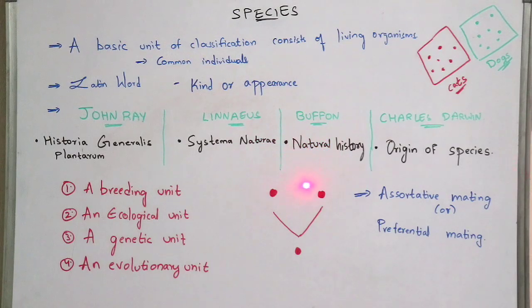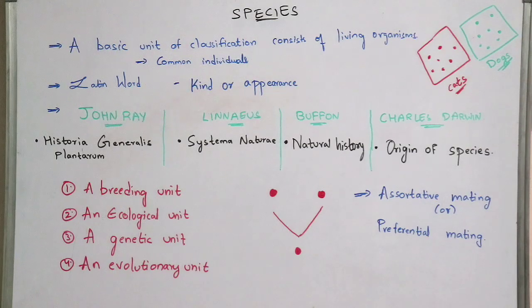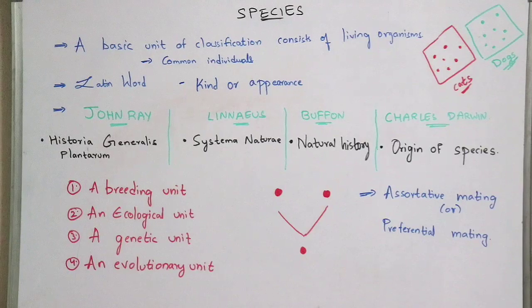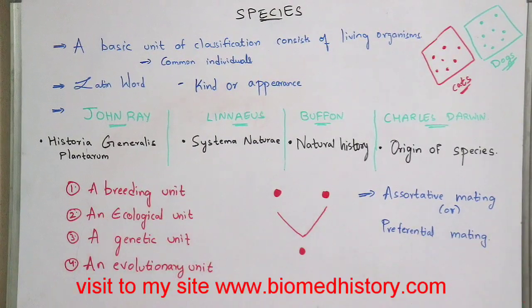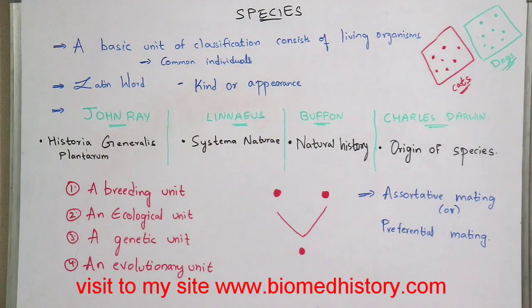The book written by Buffon is Natural History. The main content of Natural History is that he gave the idea of evolution of species, which comes under the concept of biological evolution. Evolution of species is nothing but origin of species, which will be done by natural selection. That is the main content of the book Natural History proposed by Buffon.